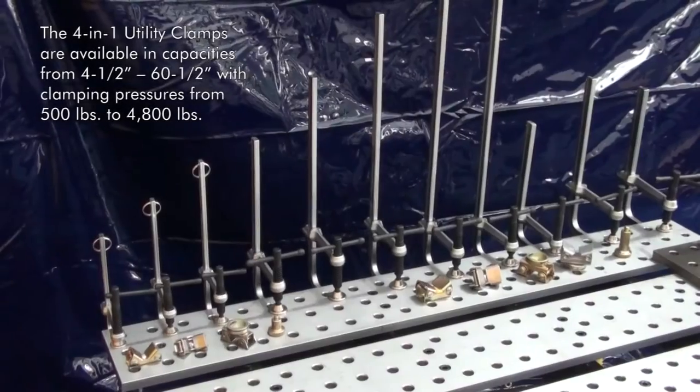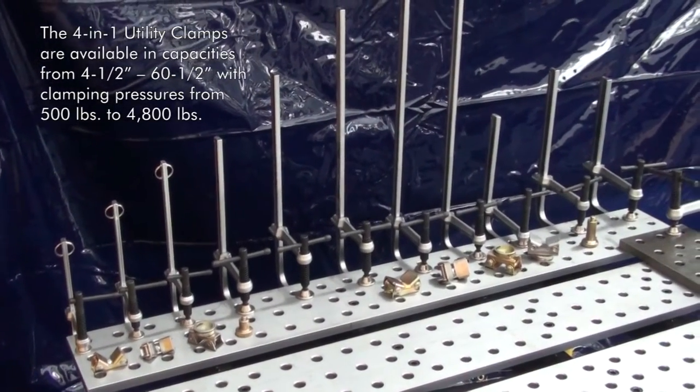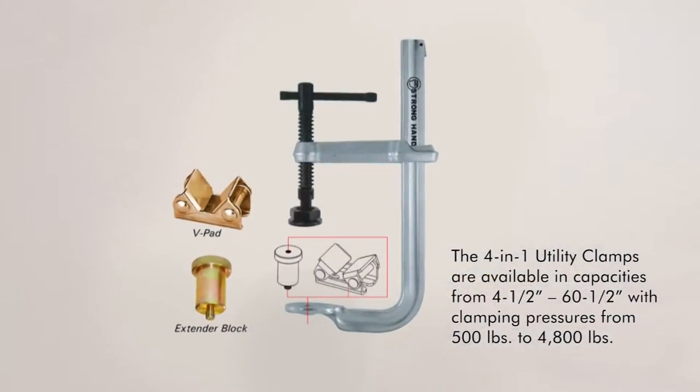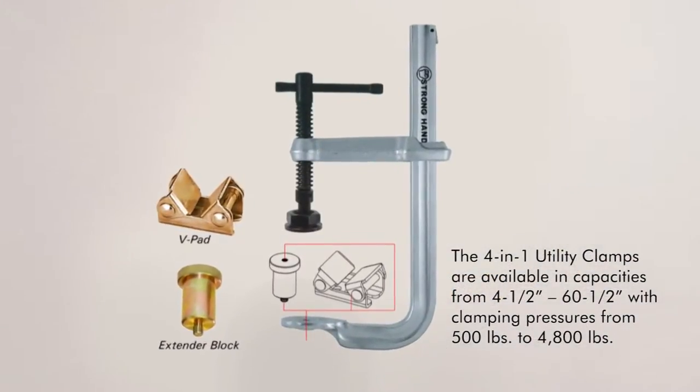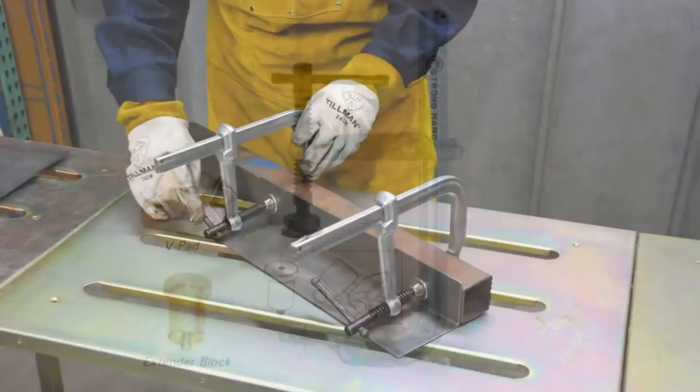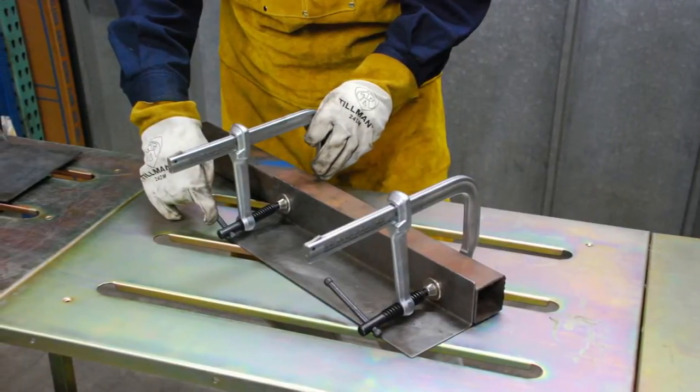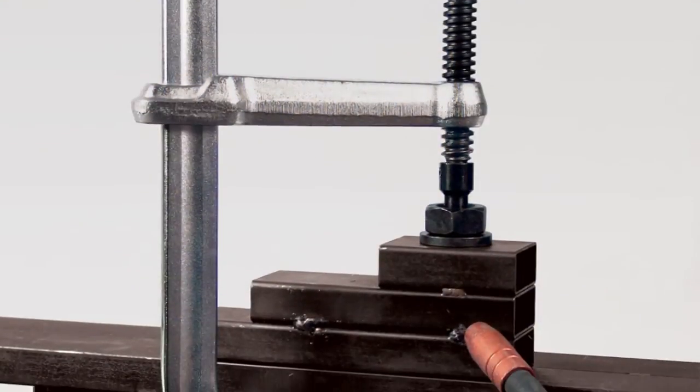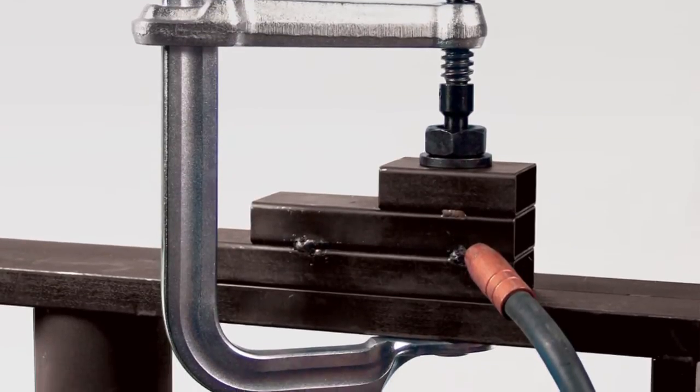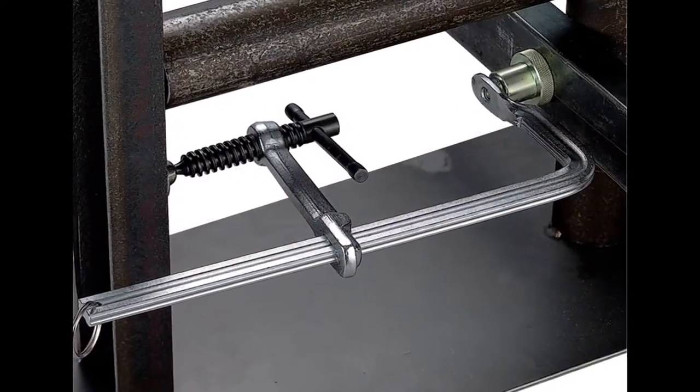The 4-in-1 clamp is a strong, versatile, affordably priced tool, making it an exceptional value. The 4-in-1 utility clamps are available in capacities from 4.5 inches to 60.5 inches, with clamping pressures from 500 pounds to 4,800 pounds.